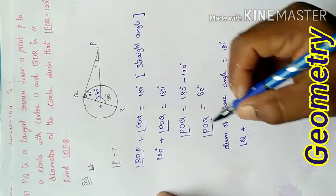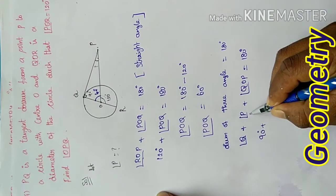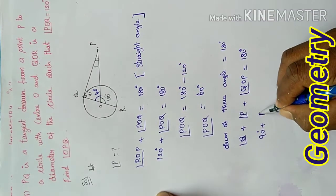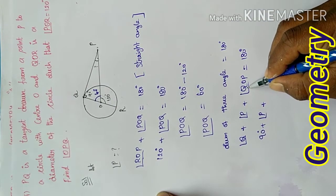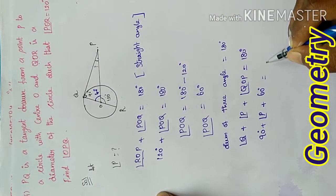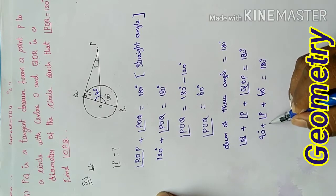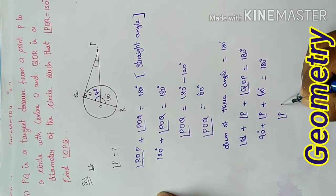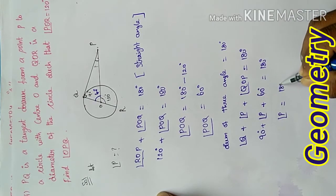Angle Q is 90 degrees (because tangent is perpendicular to radius) plus angle P plus angle O, which equals 60, equals 180. So 60 and 90 equals 150.